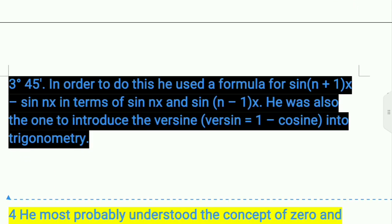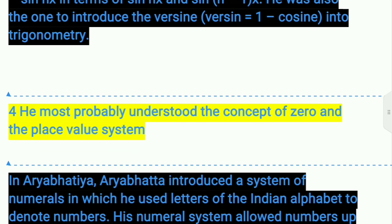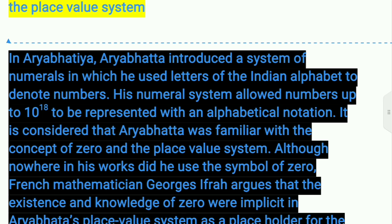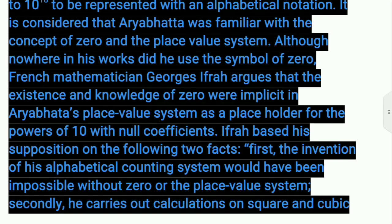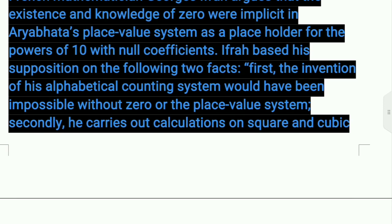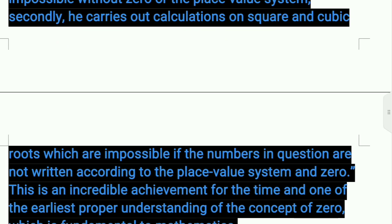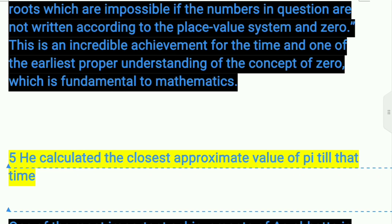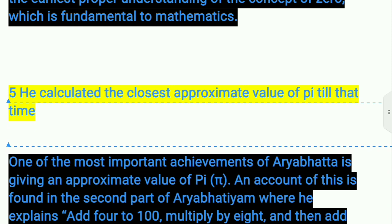One more achievement: he most probably understood the concept of zero and the place value system. And the fifth: he calculated the closest approximate value of pi till that time — pi is approximately 22/7 or 3.142.